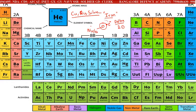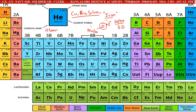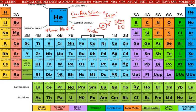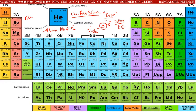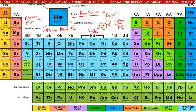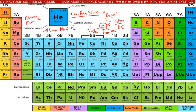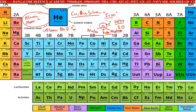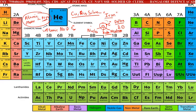What is known as atomic number and what is known as atomic mass number? The atomic number is the total number of electrons present. Inside the nucleus, you have protons and neutrons. The atomic mass number is nothing but the total of protons and neutrons together.